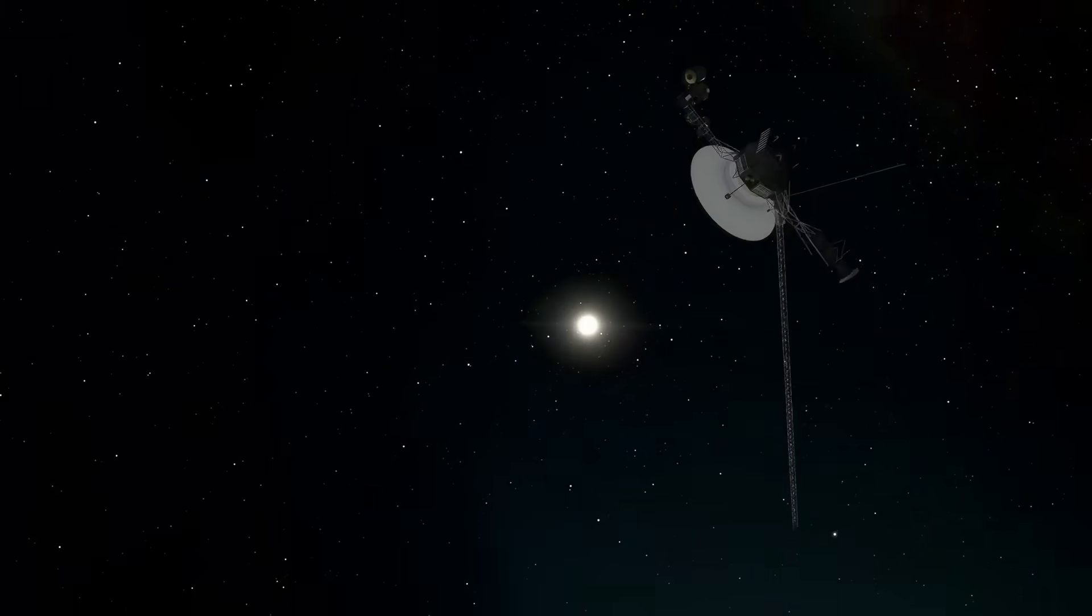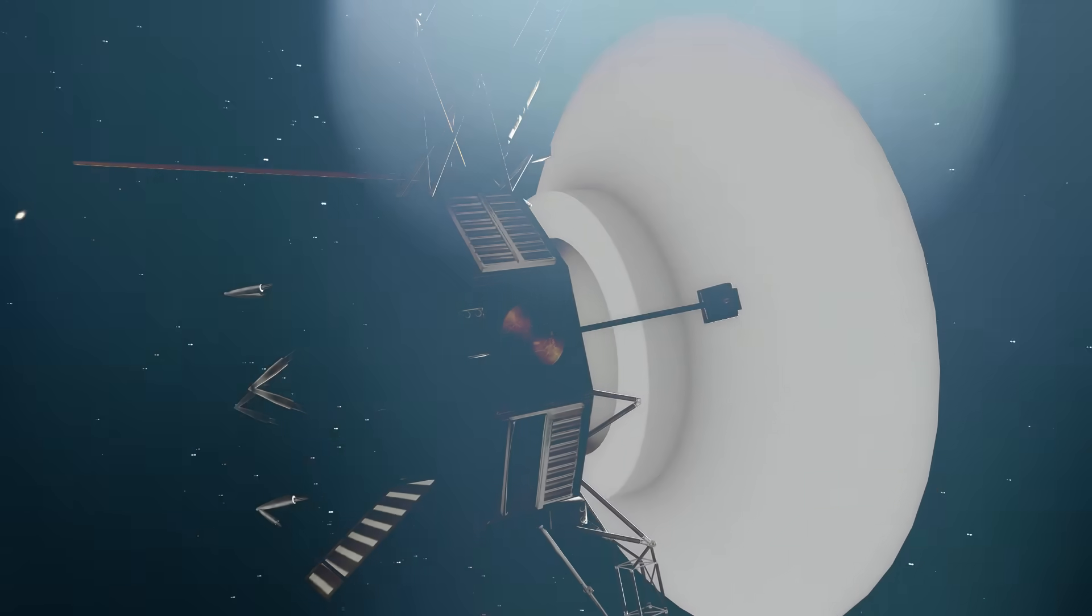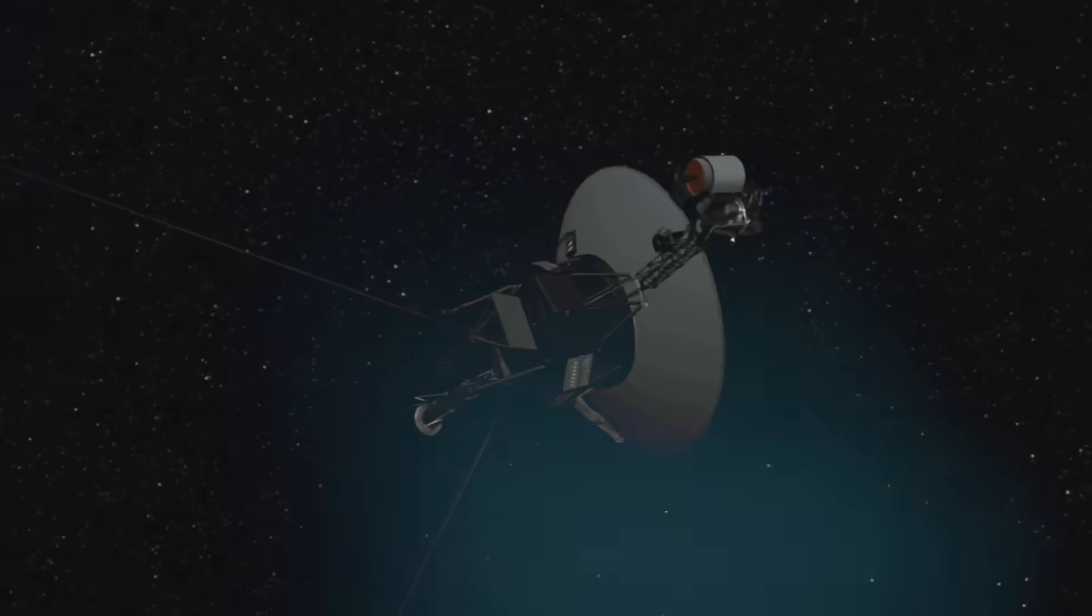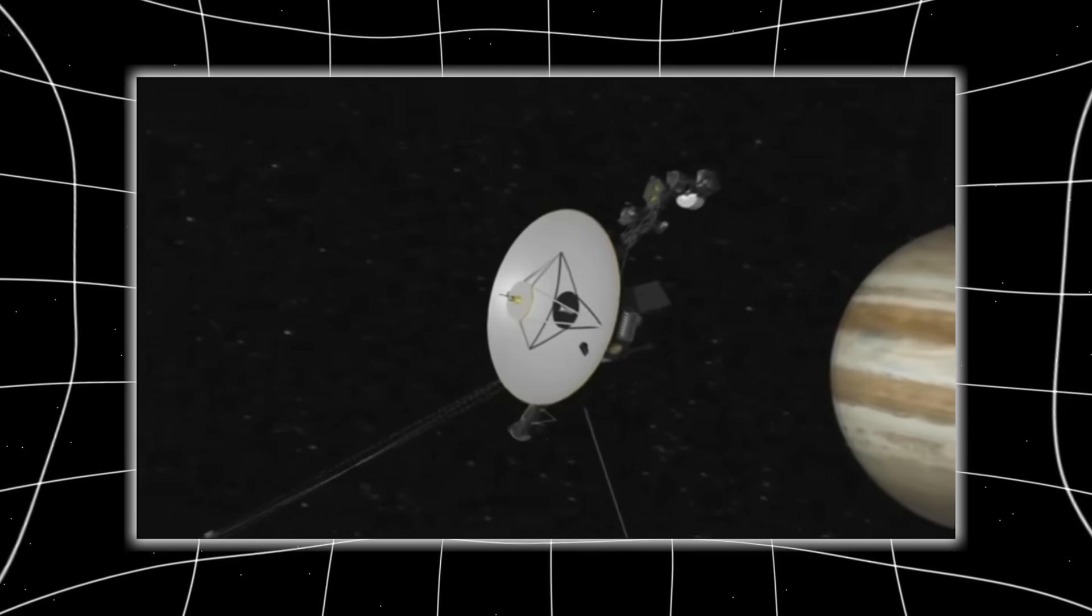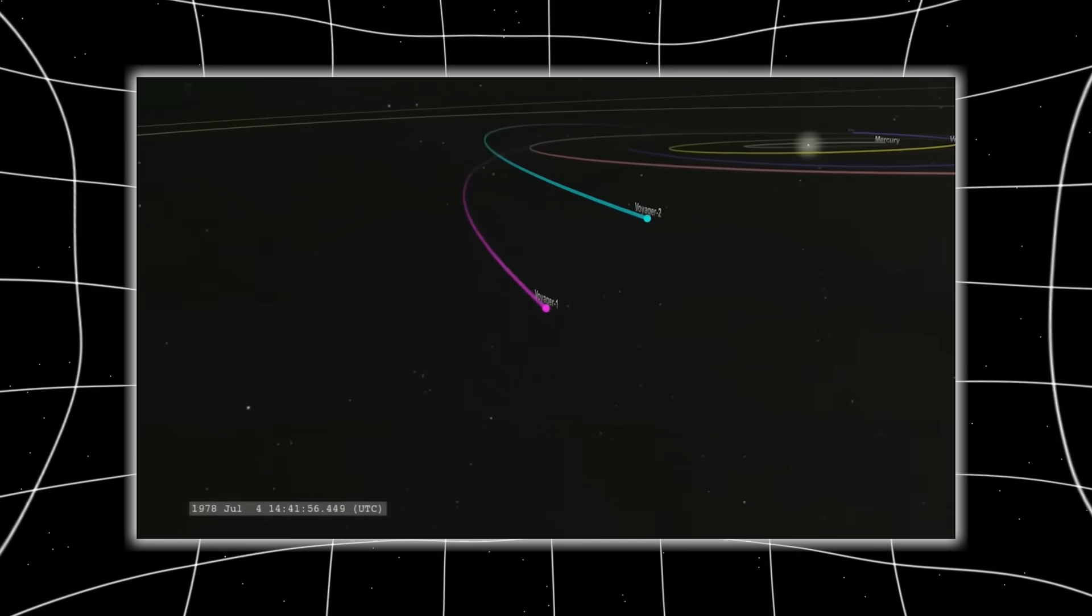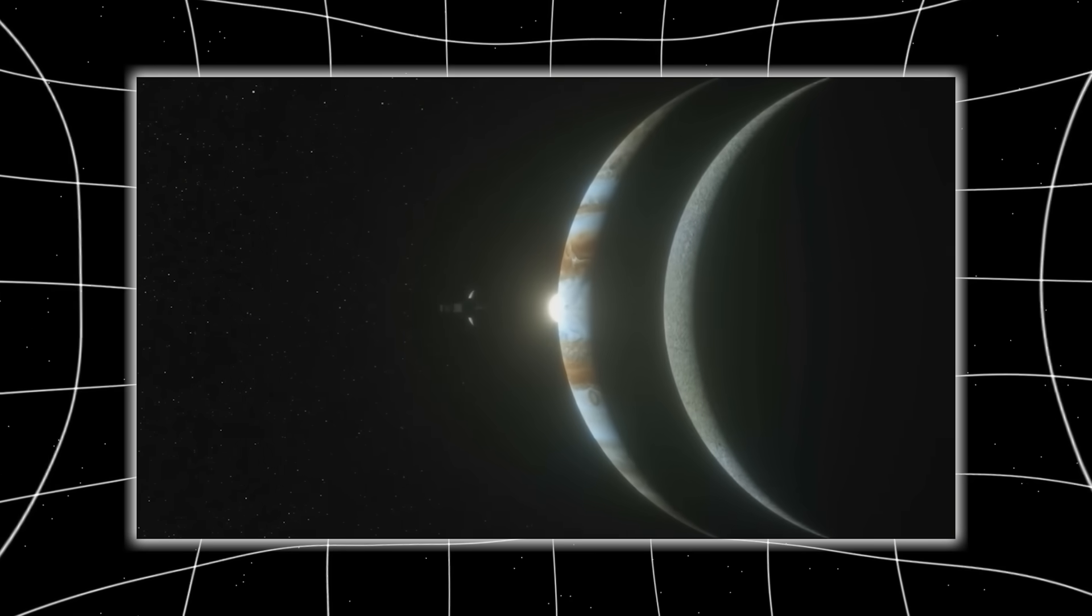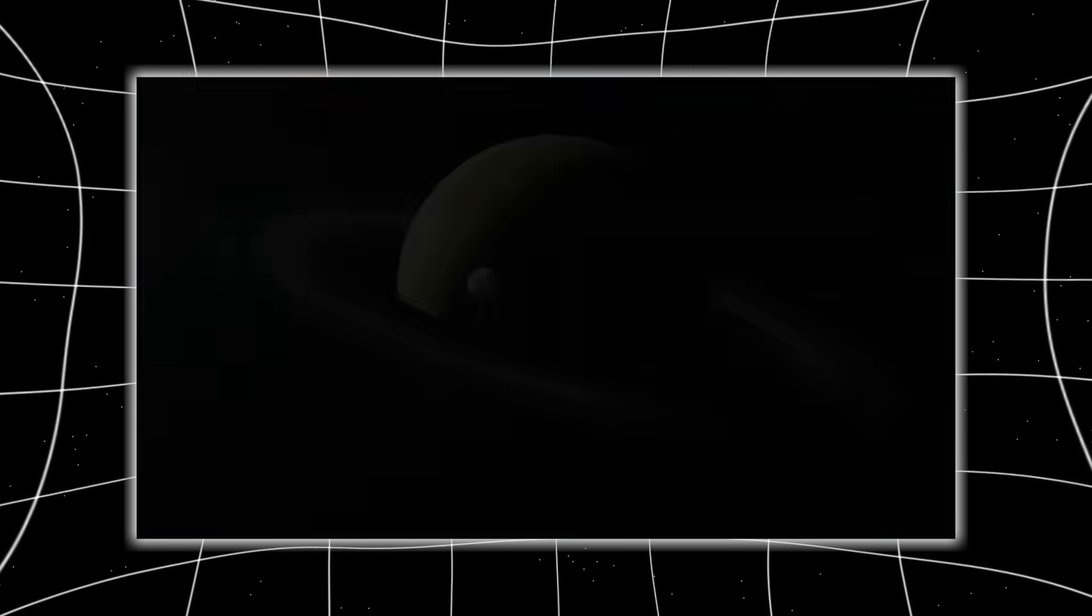Voyager 2, a fragile, aging spacecraft launched when disco ruled Earth and computers filled entire rooms, was never meant to survive this long. And yet, almost 50 years later, it's still out there, whispering secrets from the edge of existence.